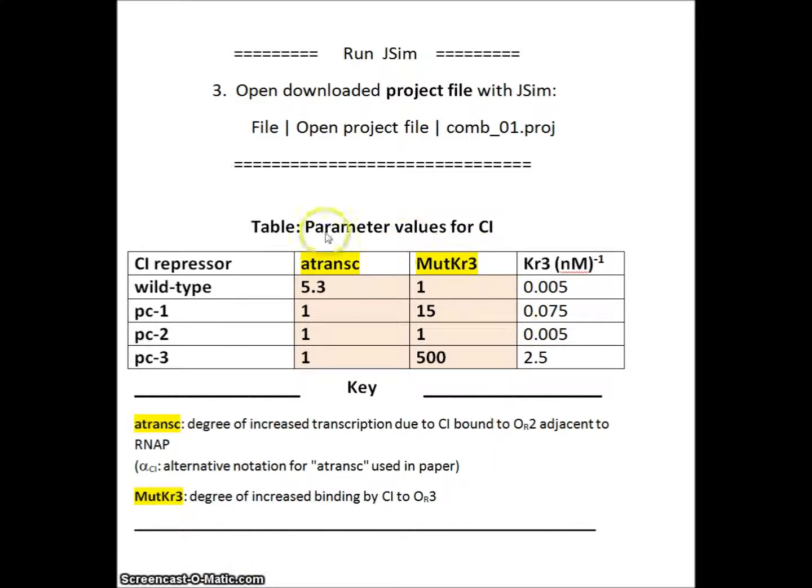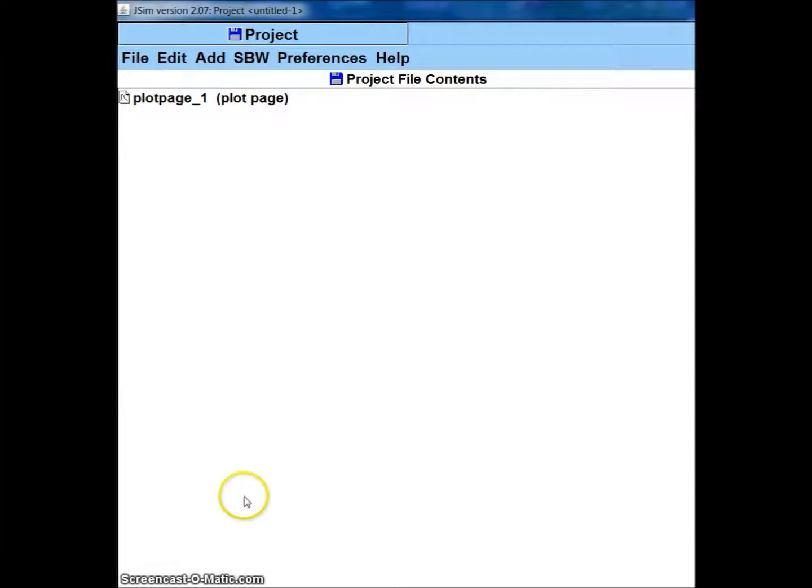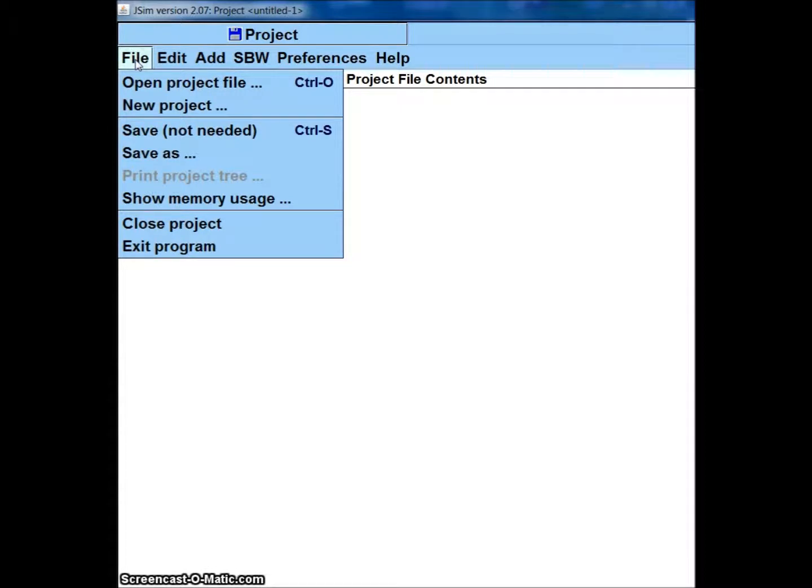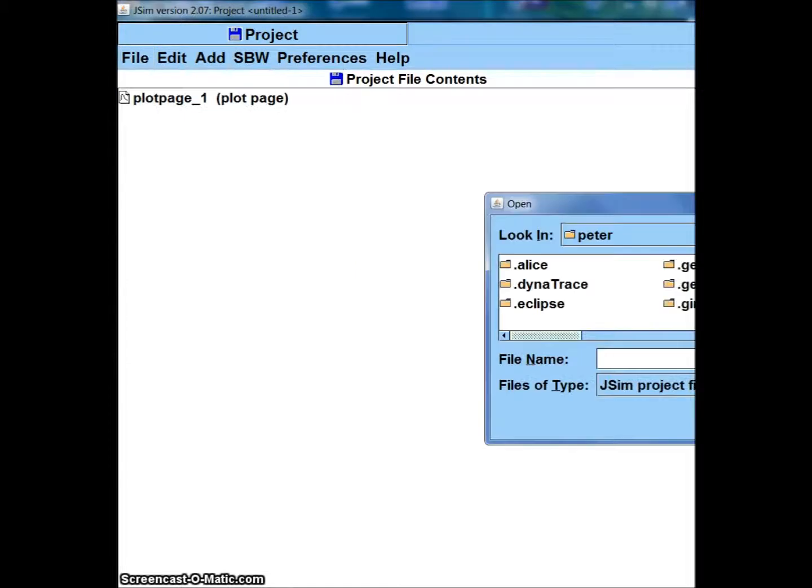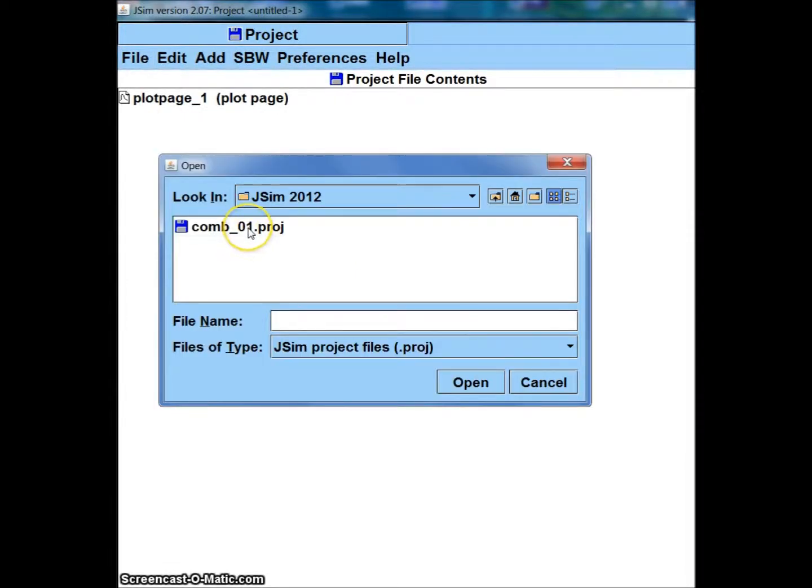We want to look at how we can incorporate these changes of transcription parameters in our model. Once we have opened our model, we need to find our project file that we have downloaded from Dropbox. We're going to open the project file. When we find it, we select it. It's comb_01.proj. We select it and open it.